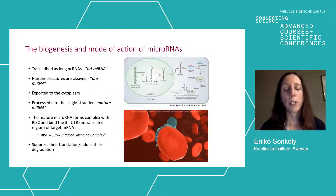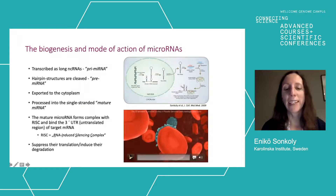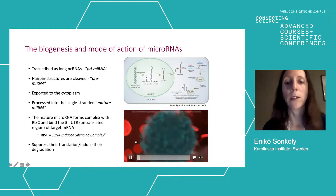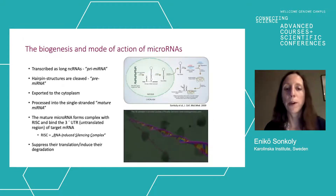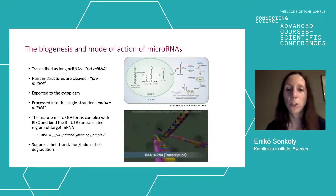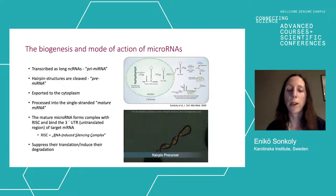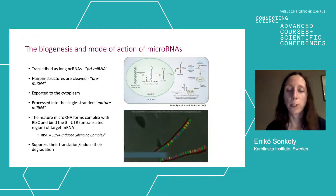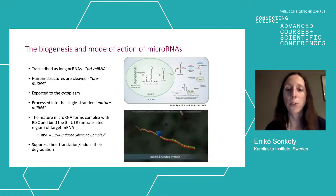So how are microRNAs produced in our cells? They are encoded in our DNA just as any other genes — they are microRNA genes. In the cell nucleus, the microRNA gene is transcribed from DNA to RNA like any protein-coding gene, producing a primary transcript. This is processed into a hairpin precursor, which is then exported from the nucleus to the cytoplasm and further processed — first to a double-stranded and then to a single-stranded mature microRNA.